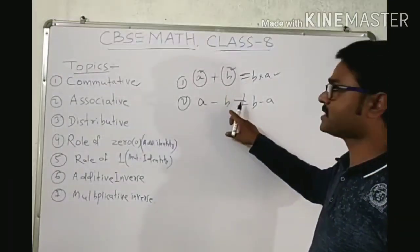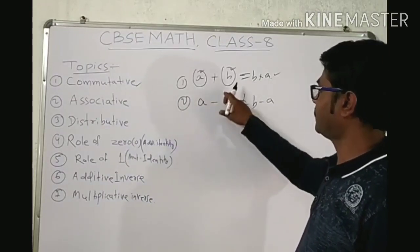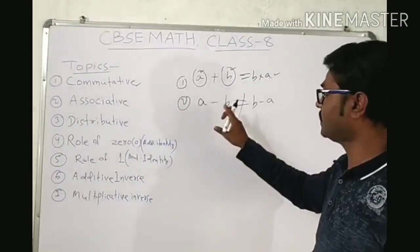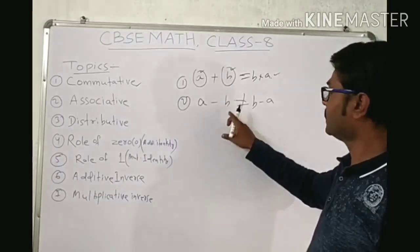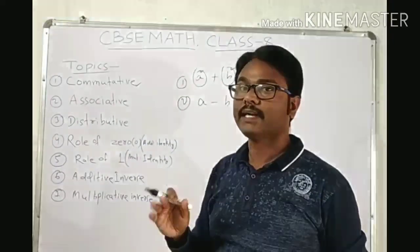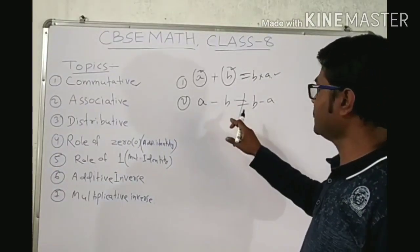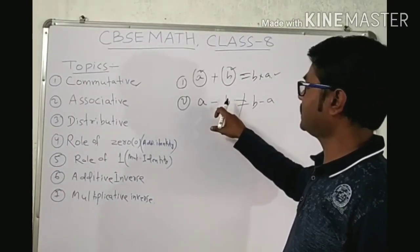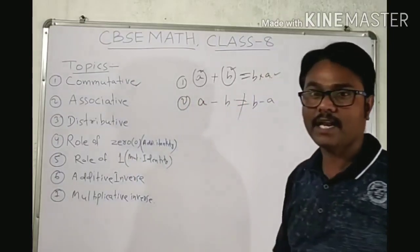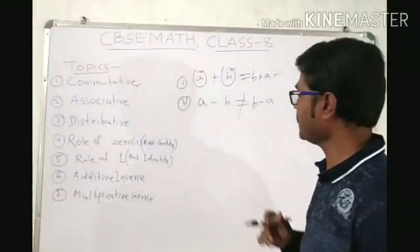You take one rational number A and one rational number B. You subtract A from B, then B minus A, and you will check that the value is not the same. Subtraction is not commutative for rational numbers.